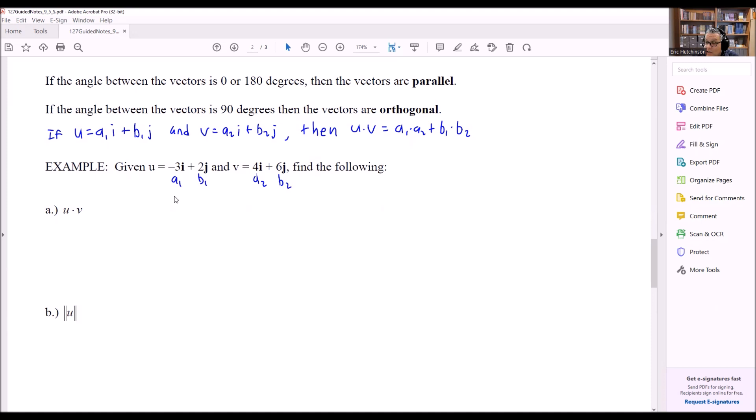So let's do this one first, u times v, we want to do the dot product. So we're going to do -3 times a2, so we're going to do -3 times 4 plus b1 times b2, so that's going to be 2 times 6. Just multiply the two first components together and add it to the other two multiplied together. Now, it just so happens that if I multiply all this out, we get a 0 for the dot product. So that is your answer for part a.